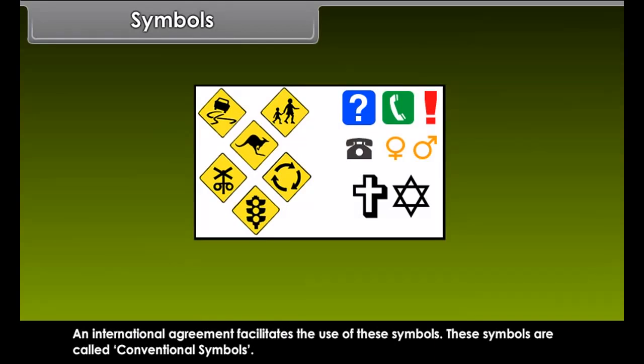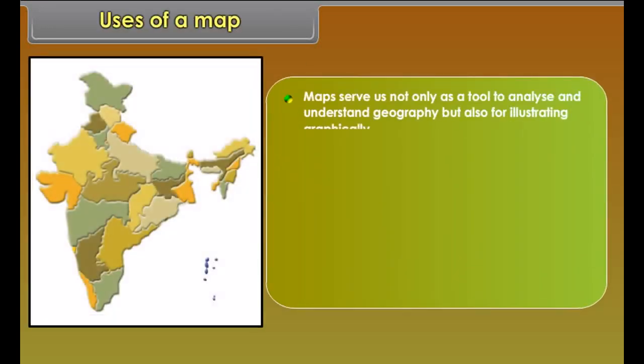Symbols. It is impossible to draw actual shape and size of different features like buildings, roads, trees, railway lines, or a well on a map. So, we use various symbols to show these features. With the help of these symbols, we can draw maps and read them easily.